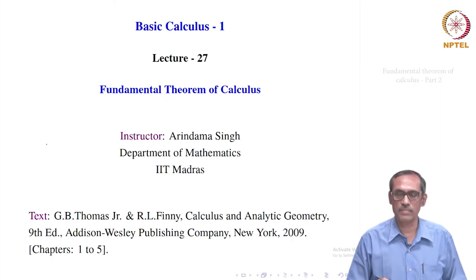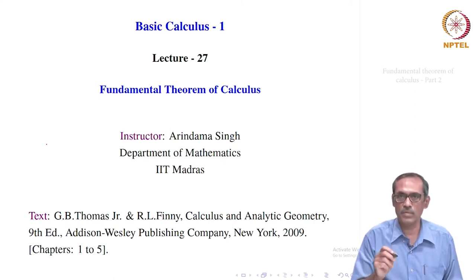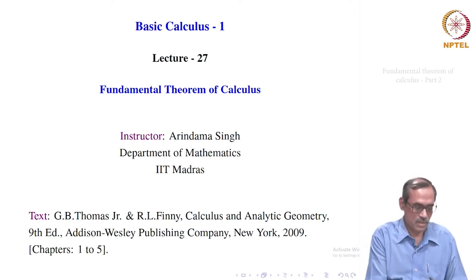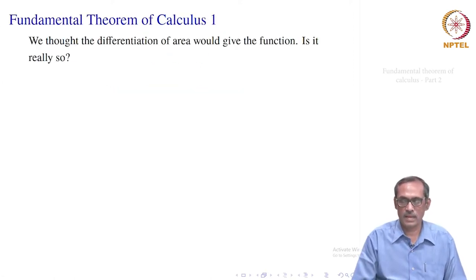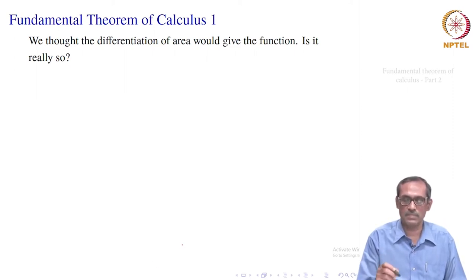This is lecture 27 of Basic Calculus 1. In the last two lectures, we had introduced the notion of definite integral. Our quest was to find a function whose derivative will be the given function, and we came to introduce the notion of area — the area below a curve, bounded by that curve, the x-axis, and two lines x equal to a and x equal to b. We thought that differentiation of the area would give us the function.